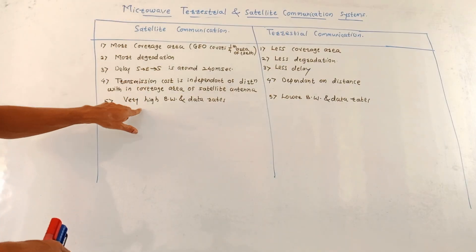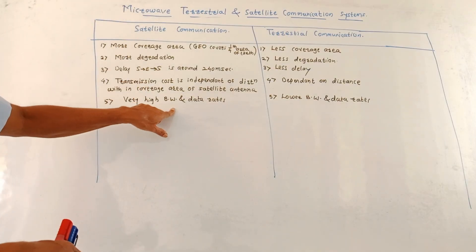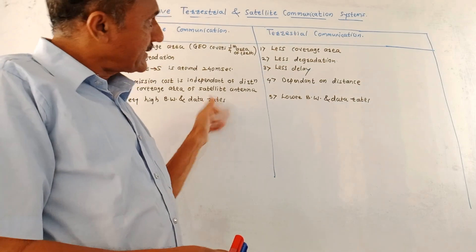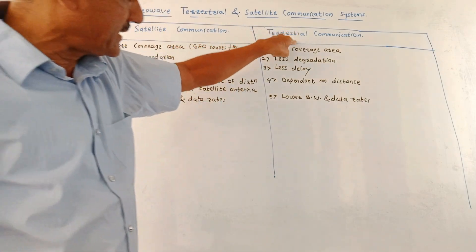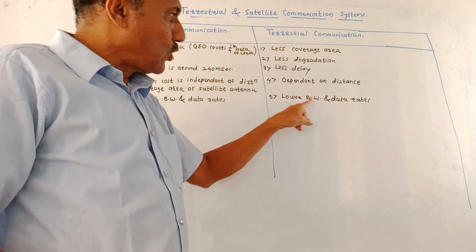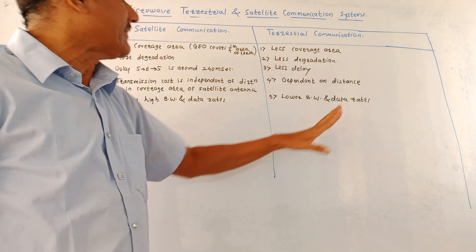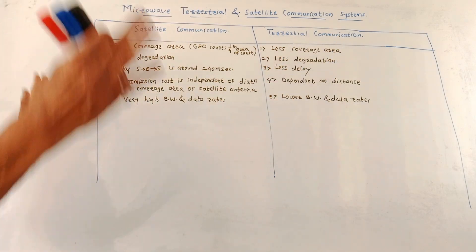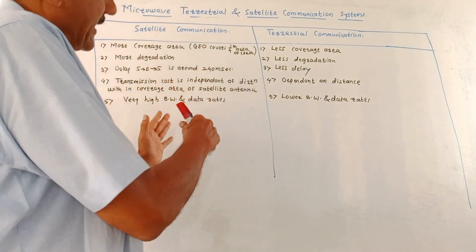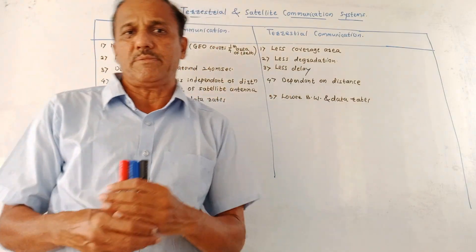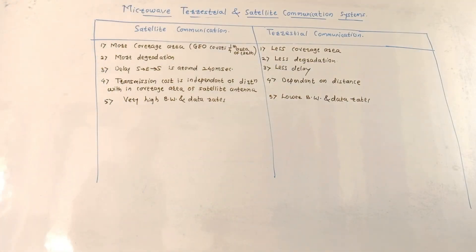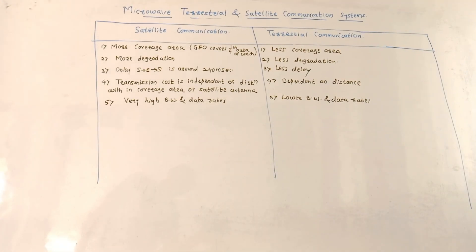Satellite communication provides very high bandwidth and very high data rates, whereas terrestrial communication provides lower bandwidth and lower data rates. So this is about the difference between satellite and terrestrial communication systems. Dear students, that's it for today's session. Thank you and thanks a lot for watching this video.